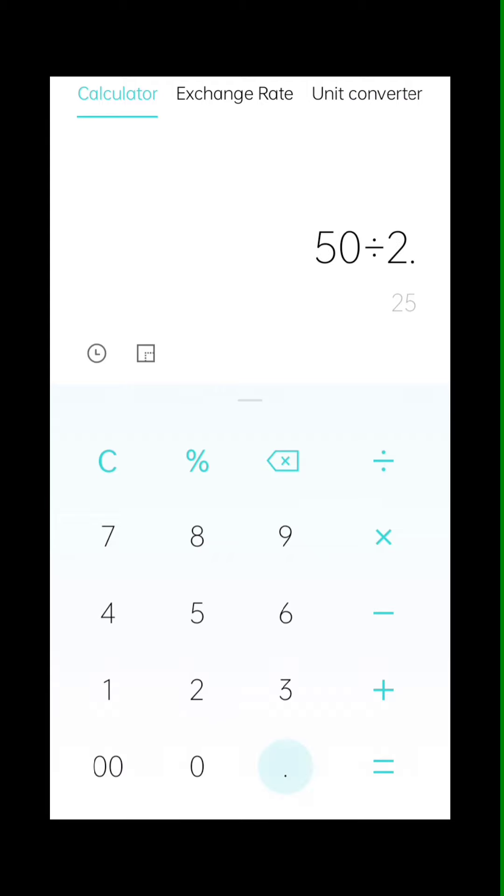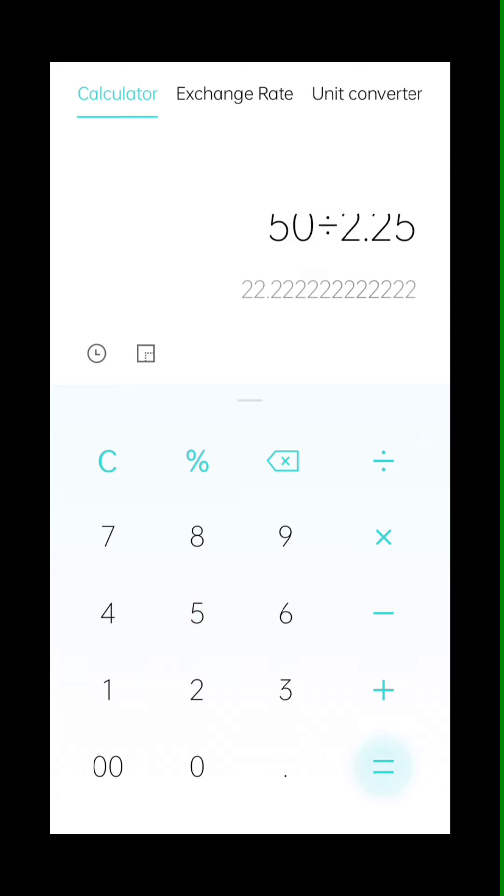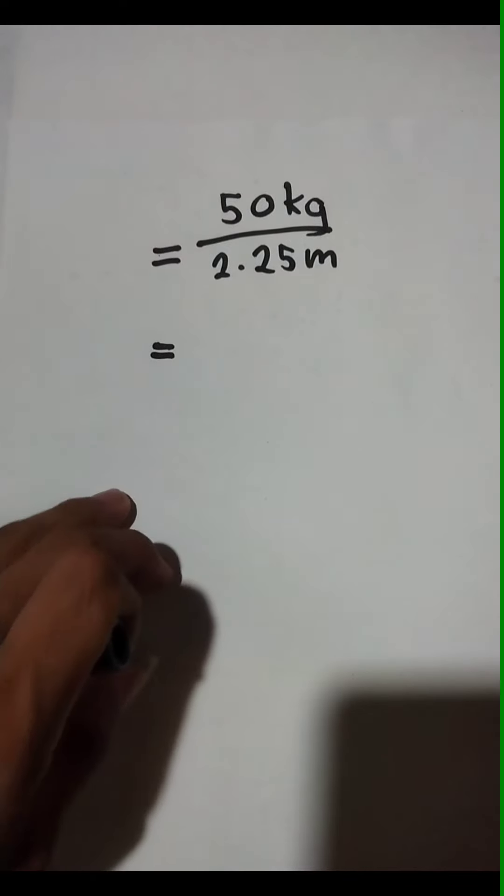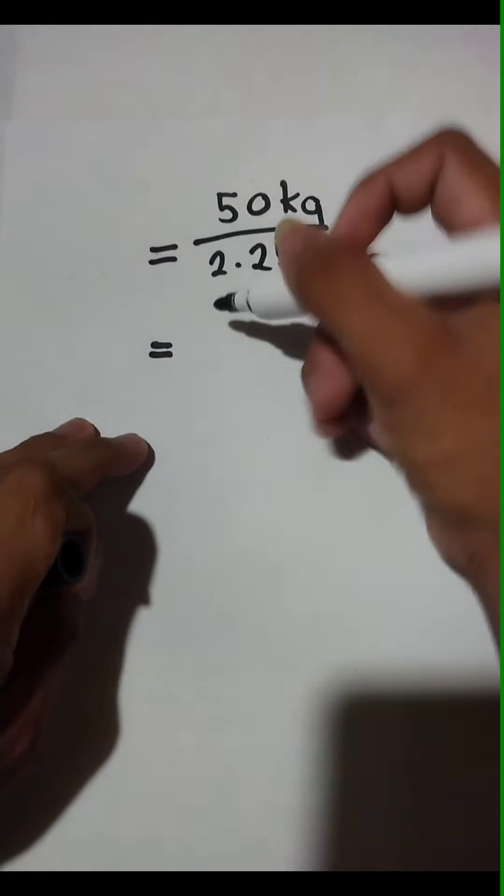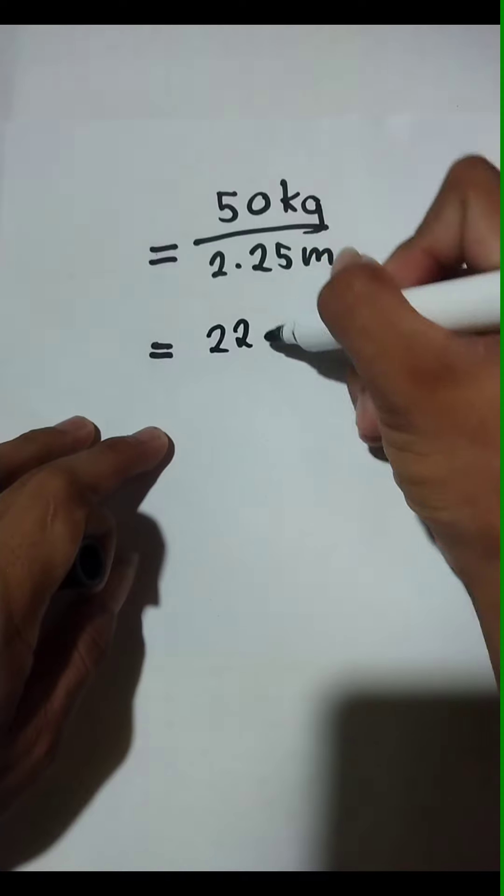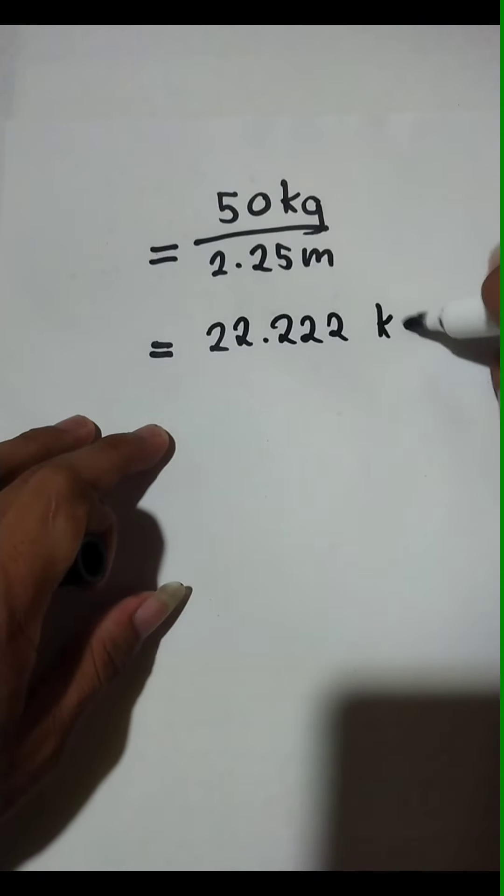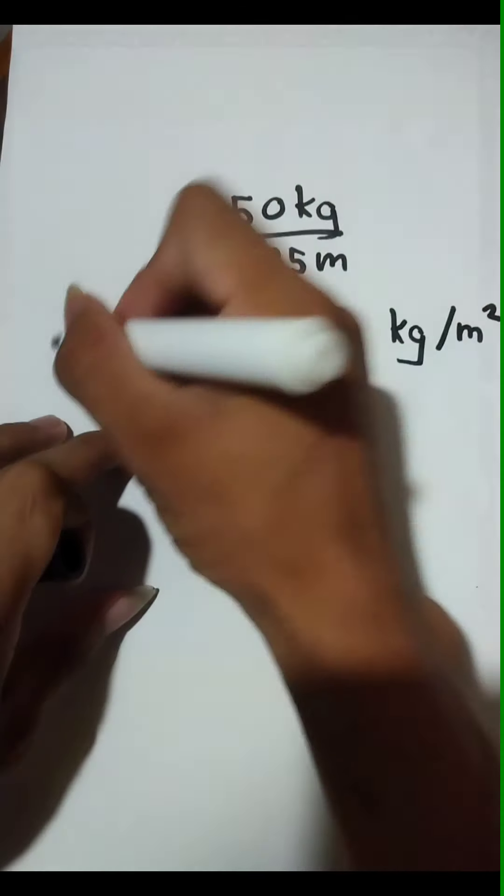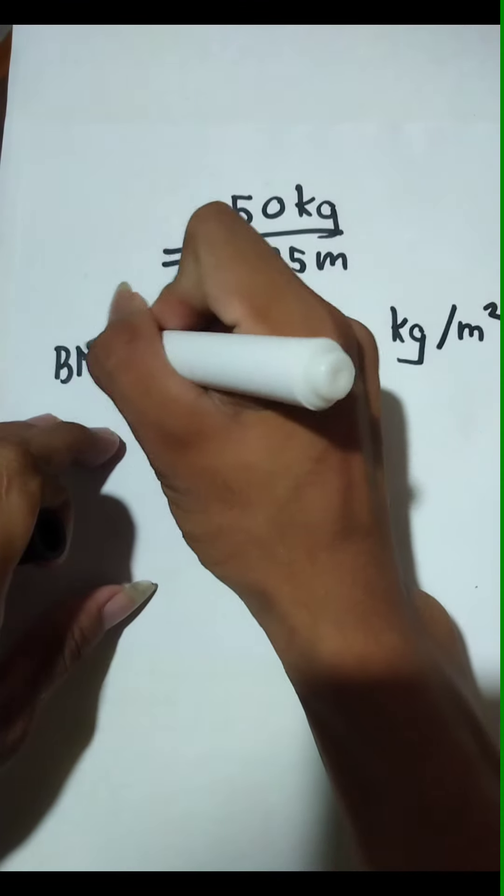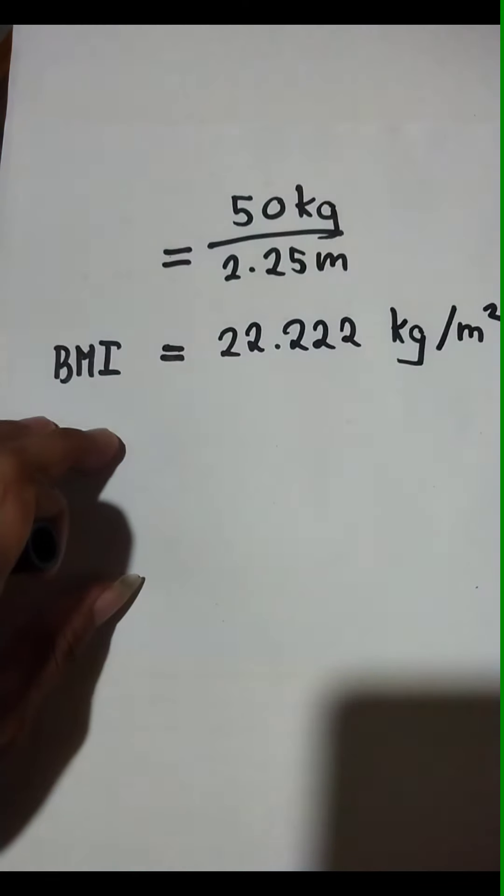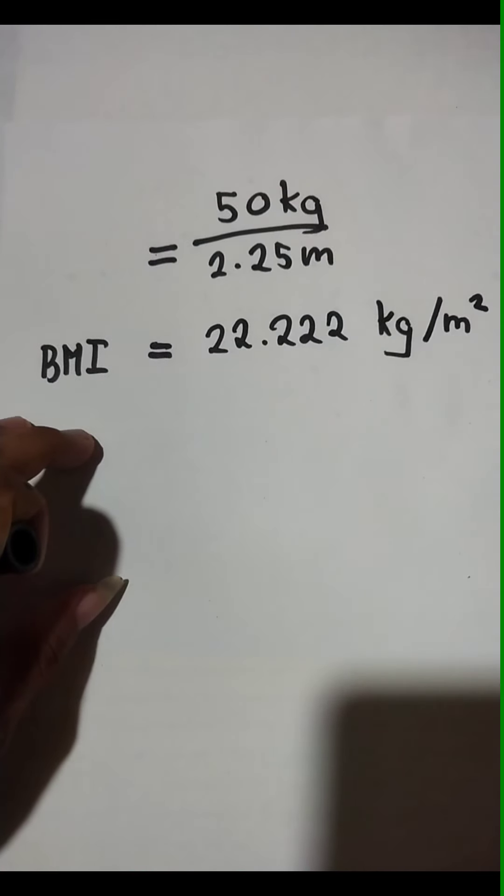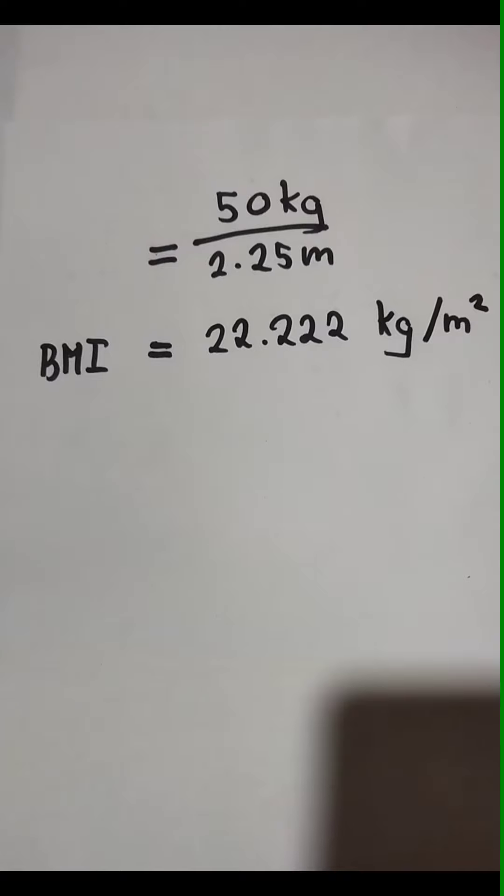...equals 22.222 and so on. So I rounded off to 22.222 kg/m². That is my BMI. So how can we identify whether our BMI is in a healthy range or not?